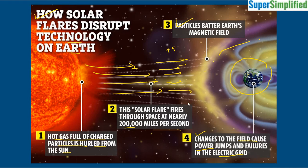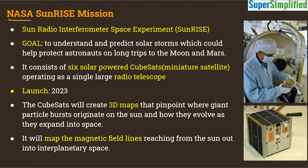Solar flares and solar storms are very dangerous for electronic equipment, for our satellites in space, for astronauts on missions, for the International Space Station, and for all the electronic gadgets and electricity-dependent systems on Earth. Those systems can get compromised and damaged by solar storms.